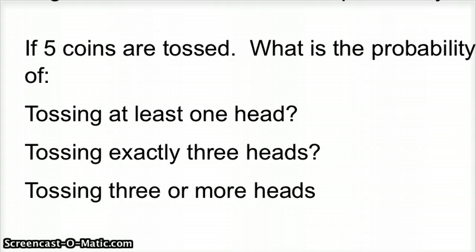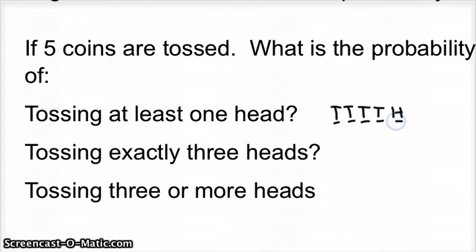If you think back, we're on the fifth row of Pascal's triangle. At least one head could be tail, tail, tail, tail, head — that would work. You could also have tail, tail, head, head, head — that's at least one. There's a couple of the sample spaces. I like to put in some sample spaces so I can see what's happening — I've got to visualize it or it doesn't work for me.